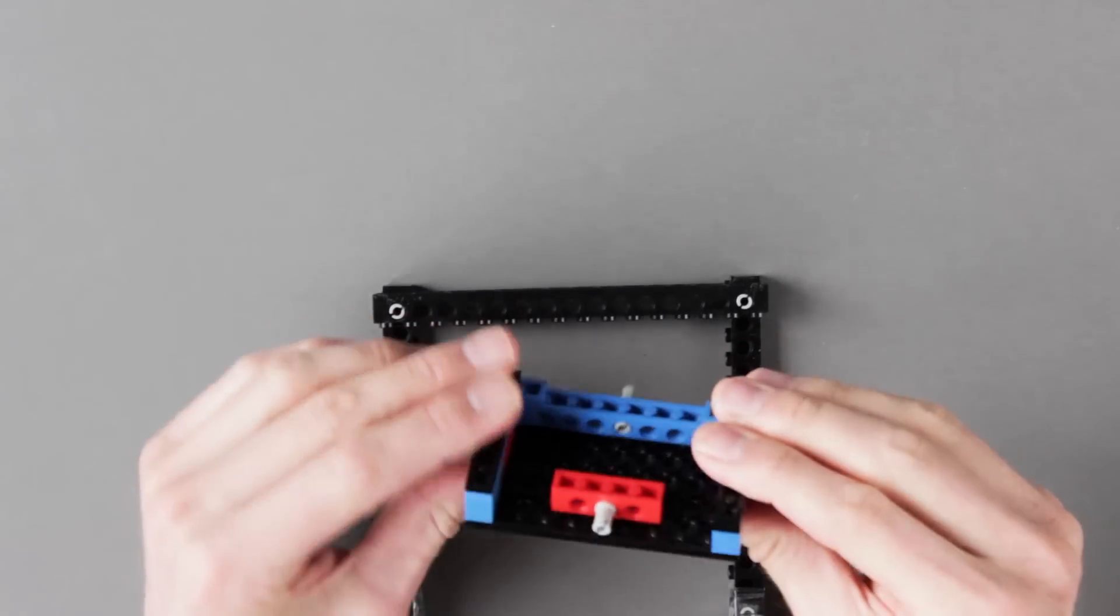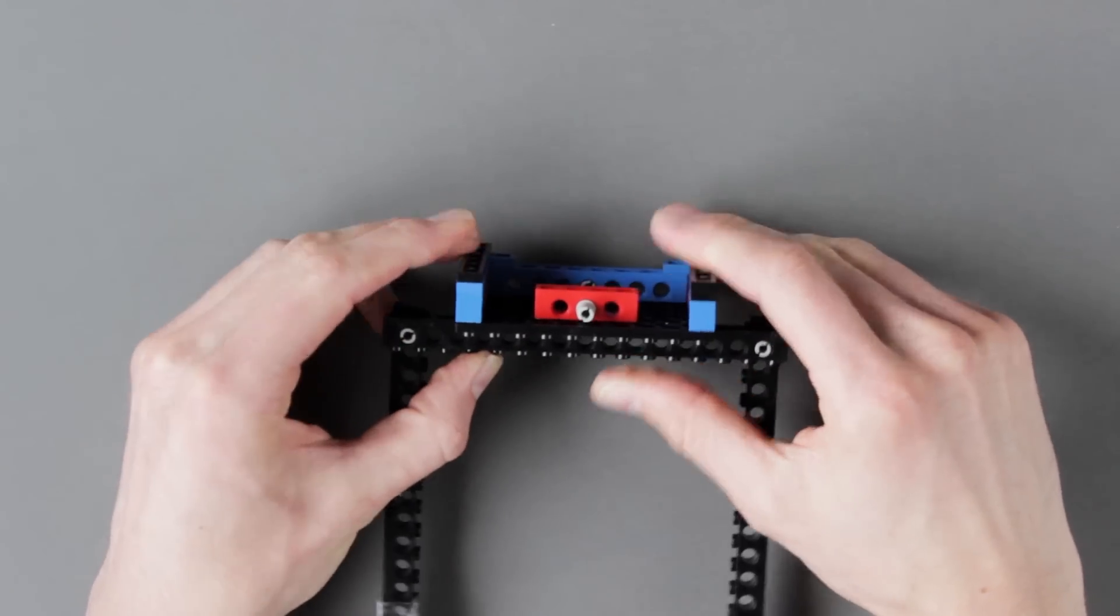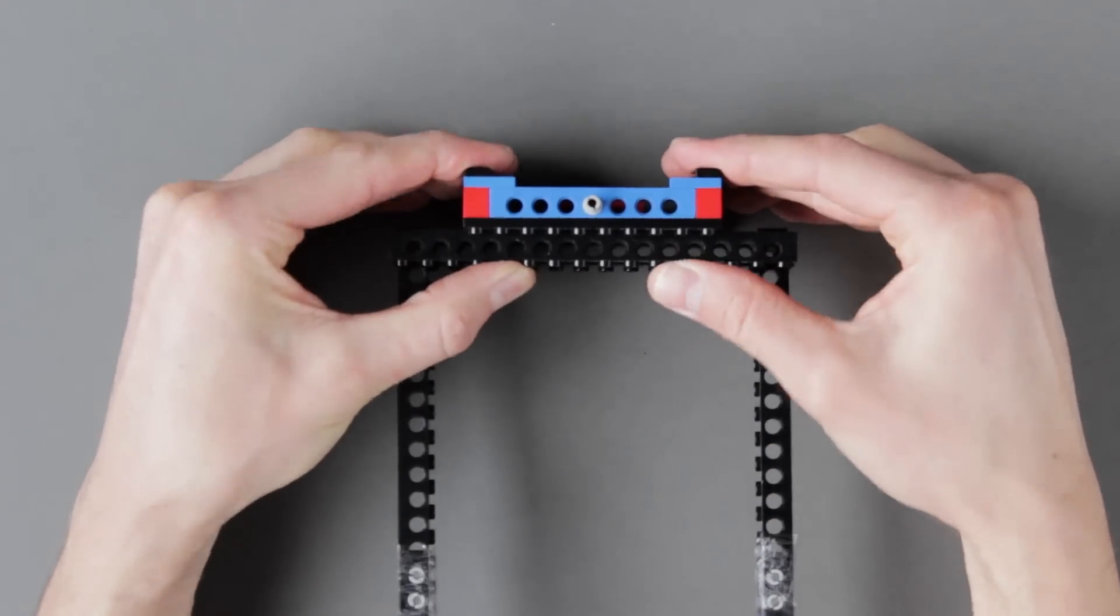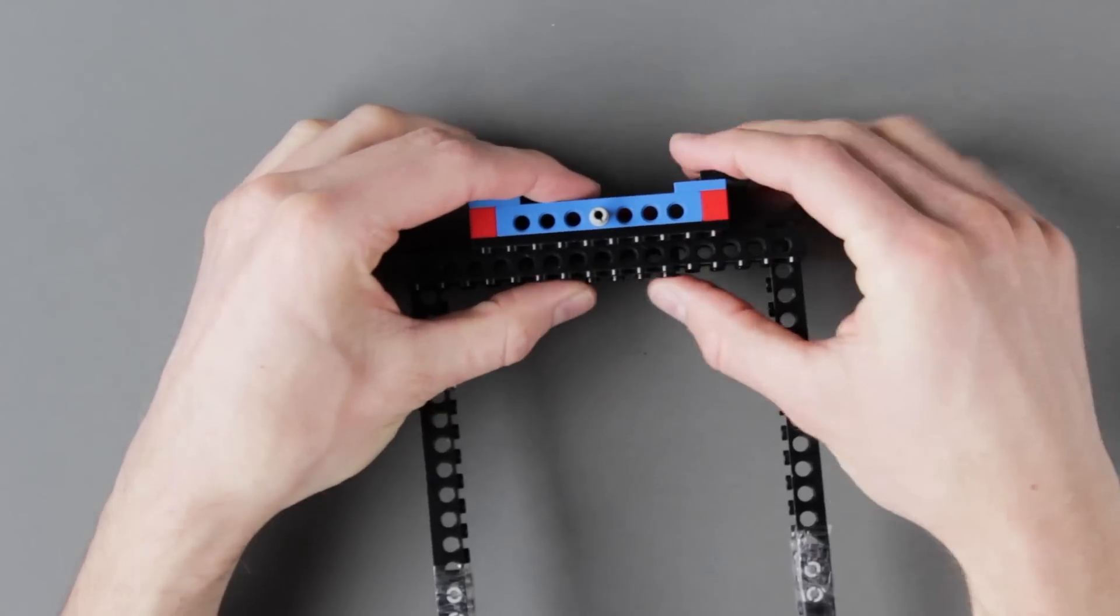I've just used what I have, so if you have longer axle pieces for example, that's okay, but you must use identical pieces in the same places on each side of the arms.